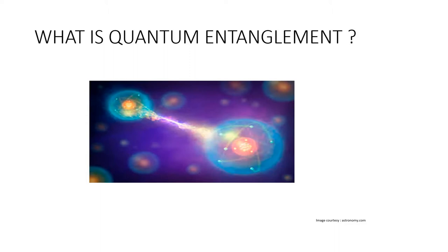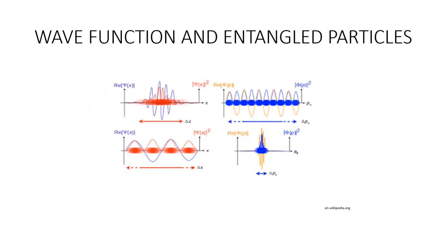Next, I am going to discuss how we can create these entangled particles, how wave function and entangled particles are related. First, let me talk about wave function. Wave function in quantum mechanics is a variable quantity that mathematically describes the wave characteristics of a particle. The value of the wave function of a particle at a given point of space and time is related to the likelihood of the particle being there at the time. It is possible to separate two subatomic particles and both are described by a single wave function. These two particles are entangled.